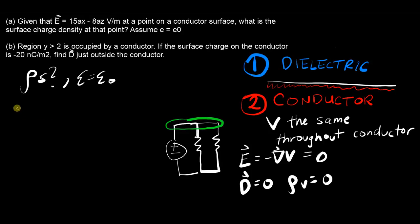I'm going to call E₁ the electric field for region one, which is the dielectric, and region two is the conductor. The electric field here is just going to equal...